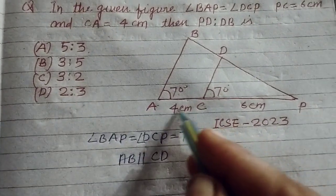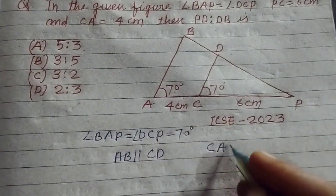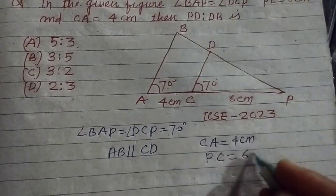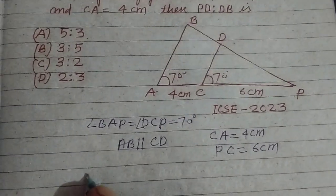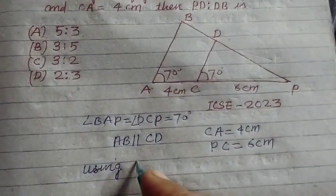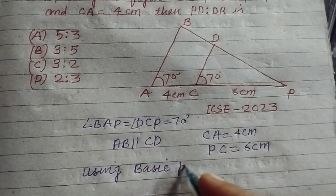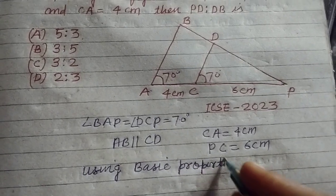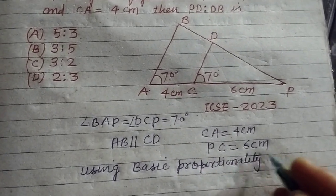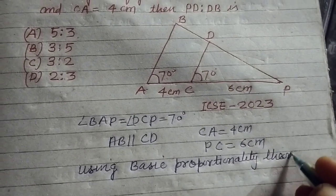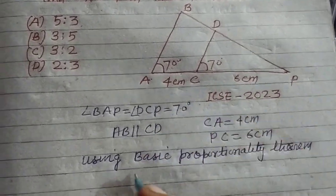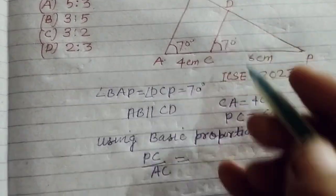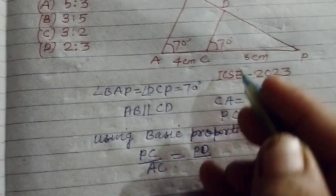Now CA is given to us as 4 cm and PC is given to us as 6 cm. So, using basic proportionality theorem, we have that PC over AC equals PD over BD.